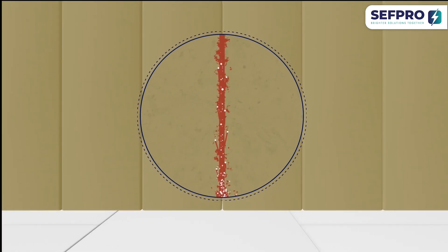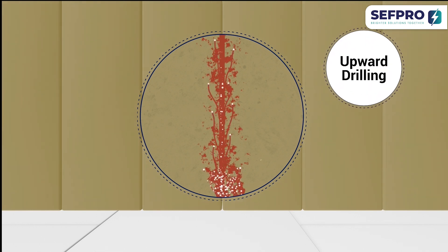This phenomenon, upward drilling, generally only affects the furnace bottom, but the result is the same: severe wear.